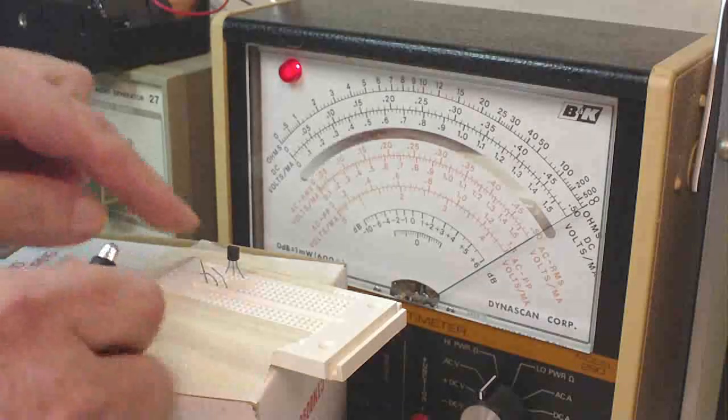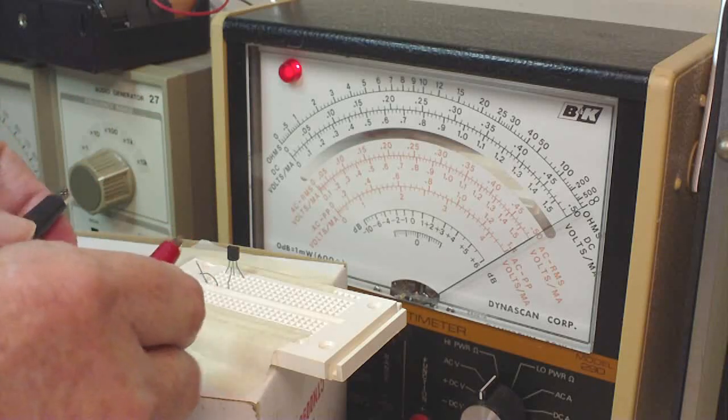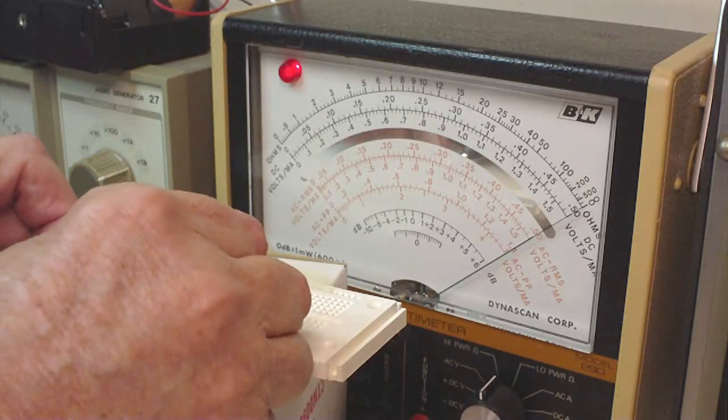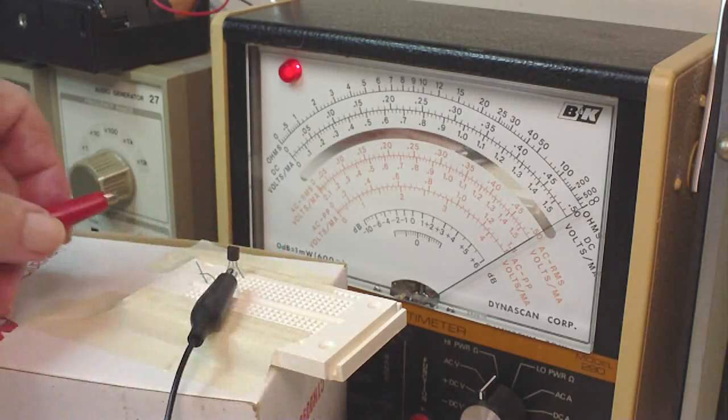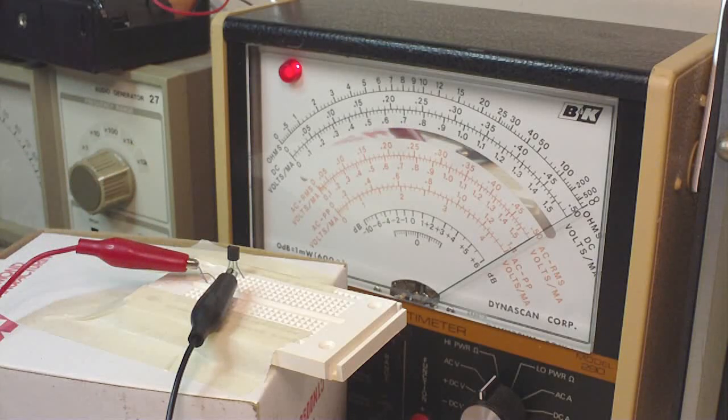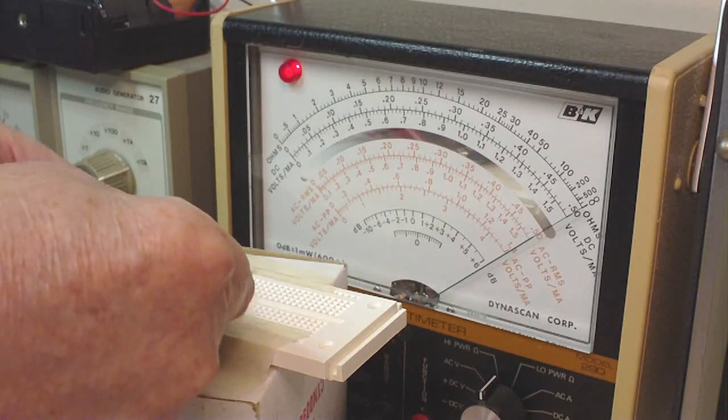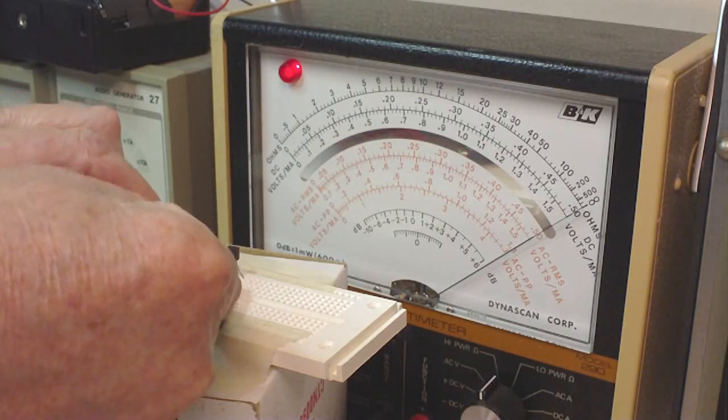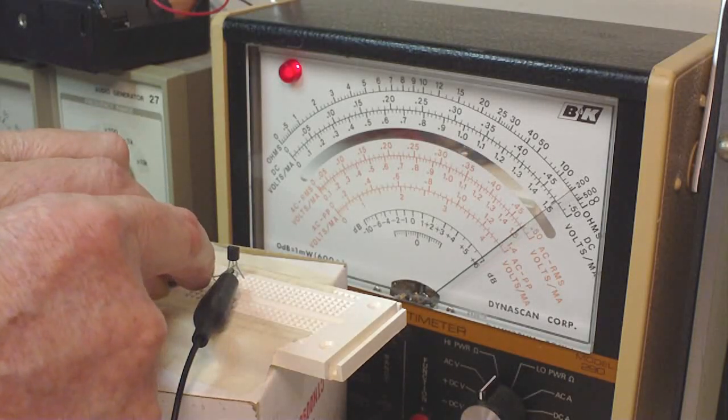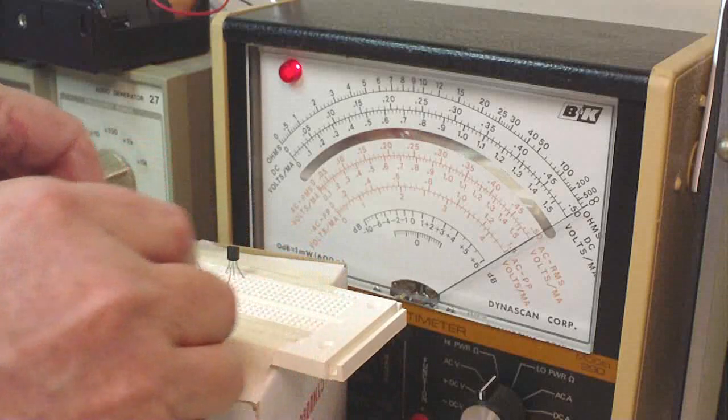Now what we don't know is which is C and E. Well, we have a PNP transistor. That means that the collector is going to be negative. And we'll just pretend that that's going to be the collector and this is going to be the emitter. This is a 100k ohm resistor. If we bias this negative, we should get a big response. And we get a little bit of movement, but not much. So let's swap this around.